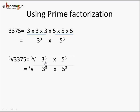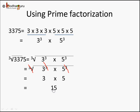Since both numbers in the product have a cube, we can cancel the cubes with the cube root. We are left with 3 and 5 alone, which is 3 into 5, giving us 15. So the cube root of 3375 is 15.